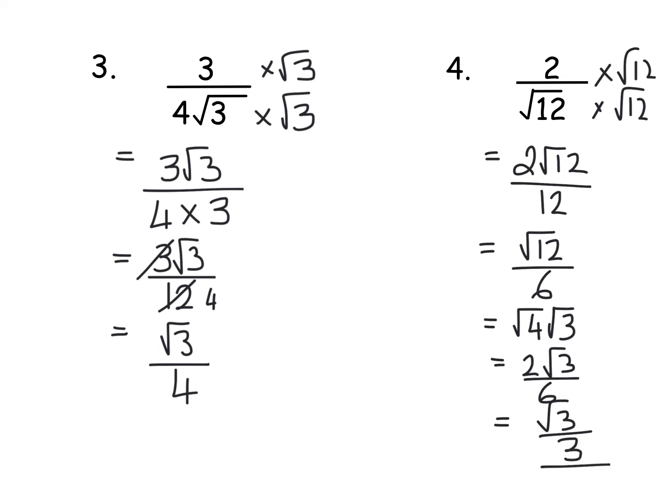Now what you could have done in this one is we could have simplified the root 12 first of all and ended up with a 2 root 3 on the bottom and then multiplied top and bottom by root 3. I've said before surds can be done more than one way. Now that's basically covered the types of examples you will see at National 5. I hope this has helped. Thanks very much.